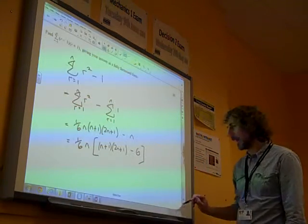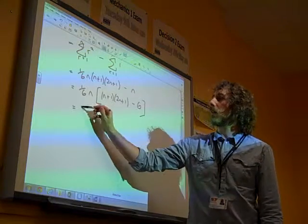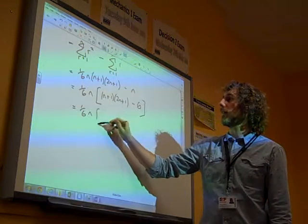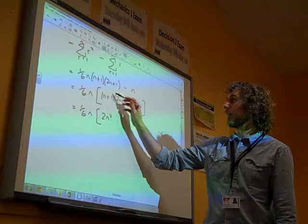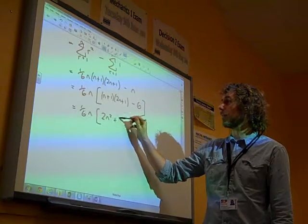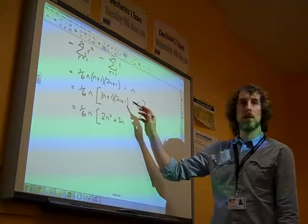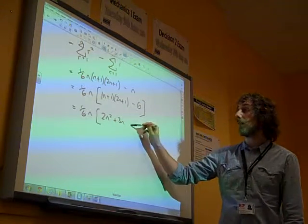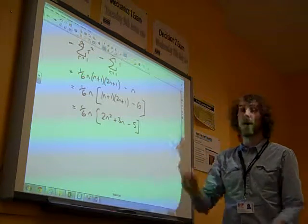So we've got, inside this, 1 sixth of n, 2n squared, what is this? 2n squared plus n plus another 2n plus 3n plus 1, minus 6. So that would be a minus 5.